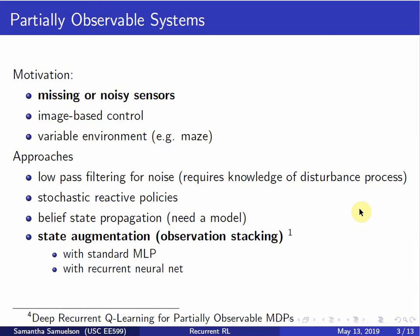Given this augmented state, there are two things we can do in terms of deep reinforcement learning, where we're using a neural net to express our policy. We can use a standard multilayer perceptron and simply feed all of that accumulated state information directly into dense layers, or we can add memory not only to our state but to the neural net itself by adding a recurrent layer.